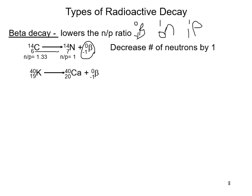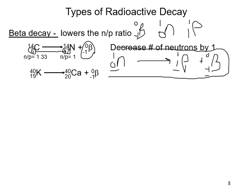A neutron (1, 0) is changed to a proton (1, 1). The electron — the beta particle (0, −1) — is ejected. Checking the math: 1 plus (−1) equals 0, and 1 plus 0 equals 1, so the equation balances. This small reaction shows the interconversion of subatomic particles; the proton stays in the nucleus while the beta particle is emitted.